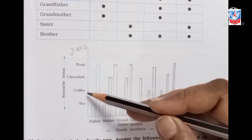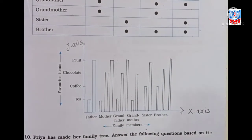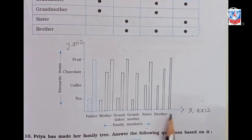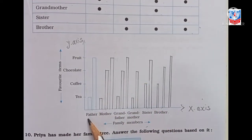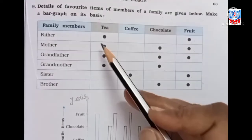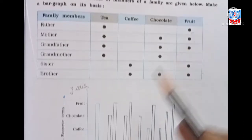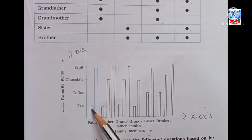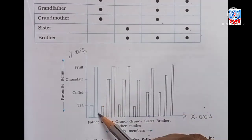The first one is done for you. Father likes tea and fruit, so you can see here: tea and fruit bars are marked for father. This is how you draw them.